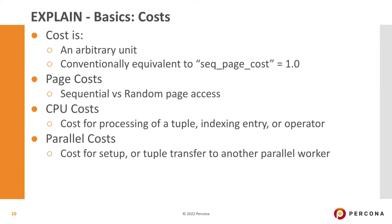Then you have CPU costs, with multiple types: processing a tuple costs 0.01, processing an index entry is half of that, and processing an operator is half of that again. In the overall cost calculation, these are multiplied by the number of rows estimated to produce the total cost value.